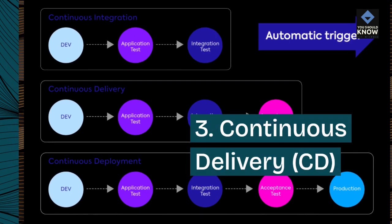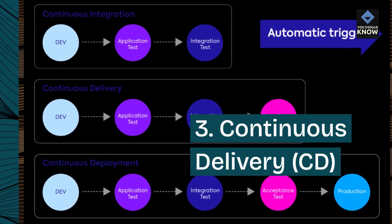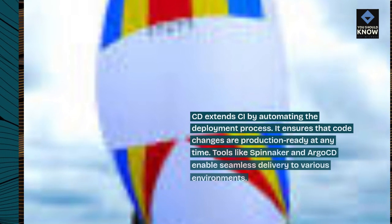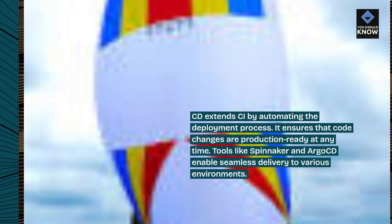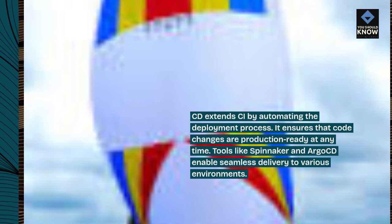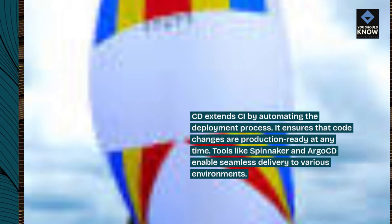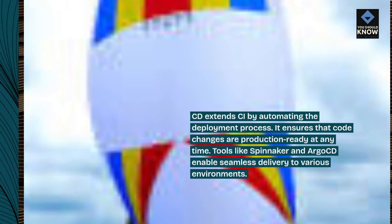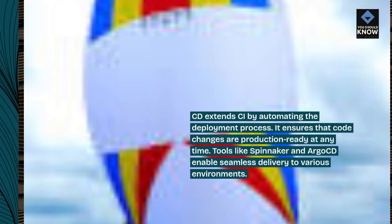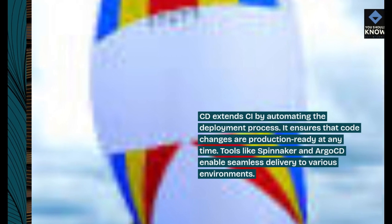3. Continuous Delivery (CD). CD extends CI by automating the deployment process. It ensures that code changes are production-ready at any time. Tools like Spinnaker and Argo CD enable seamless delivery to various environments.